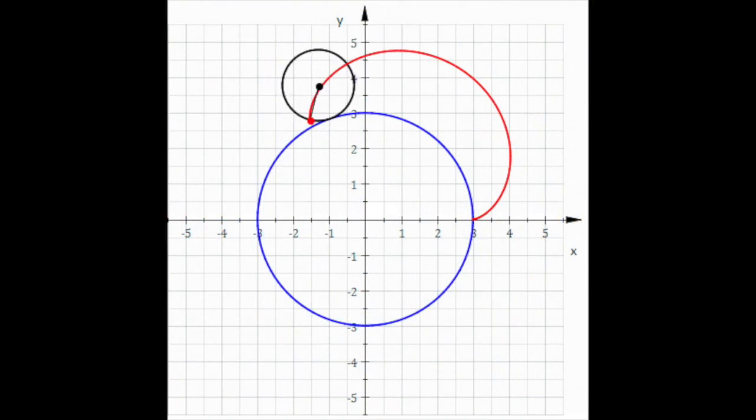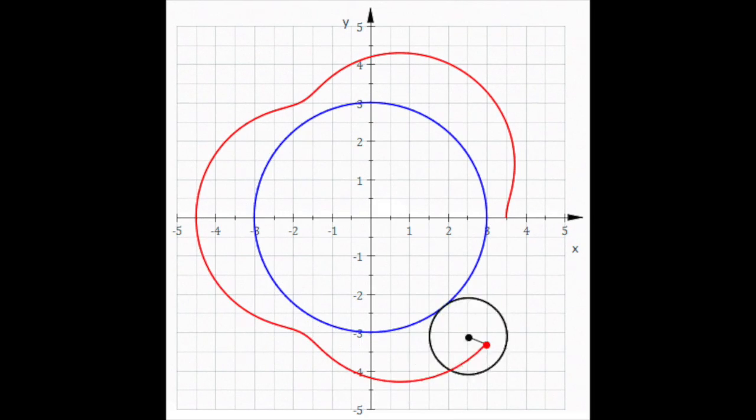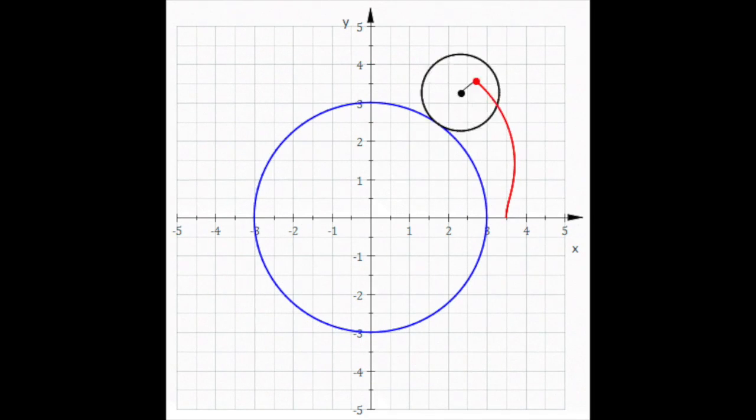In the same family of curves as the hypocycloid and hypotrochoid are the epicycloid and epitrochoid. The prefix epi just means outside. So an epicycloid is the path traced out by a point on the circumference of a circle of radius b, rolling on the outside of a circle of radius a.